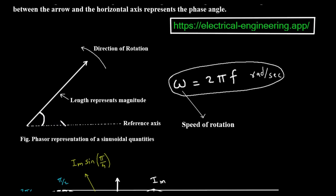Now, this phasor is not static — it rotates. The diagram shows an arrow indicating the direction of rotation, which is typically counterclockwise. This rotation represents the progression of the sine wave through time. But how fast does it rotate? That's given by the speed of rotation, represented by the Greek letter omega. The formula is omega equals 2 times pi times f, and its units are radians per second. Here, f is the frequency of the AC signal in hertz. So the speed at which our phasor arrow spins around is directly determined by the frequency of the AC voltage or current it represents.